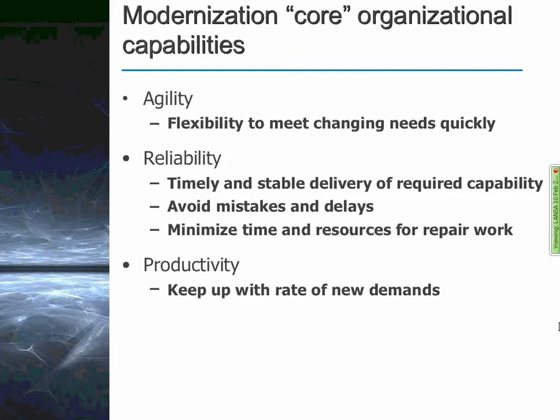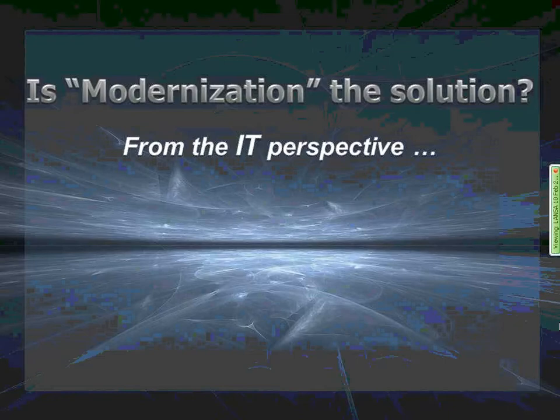And then productivity — something we've always struggled for — requires us to keep up with the rate of new demands, which is much higher than it has been in the past. So agility, reliability, and productivity are really those fundamental capabilities of the organization.